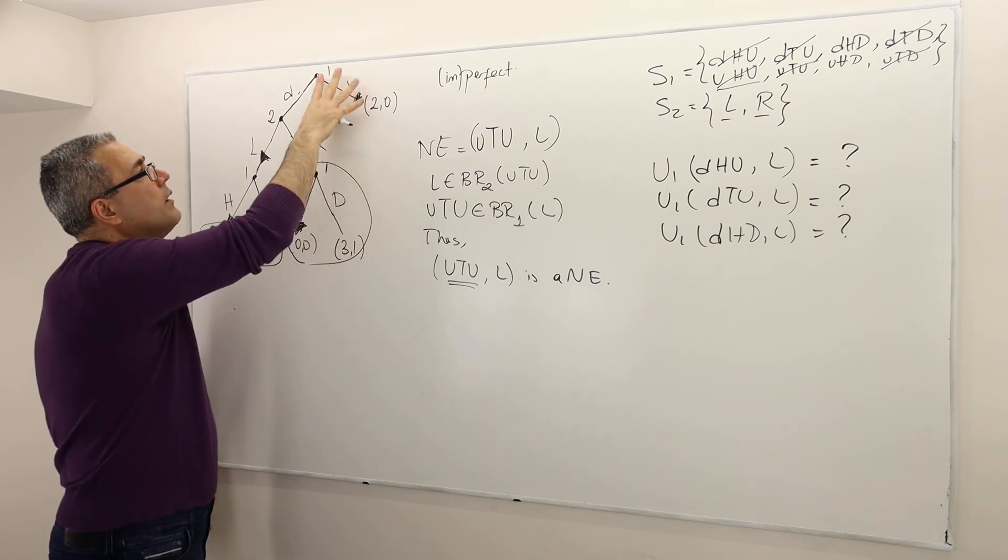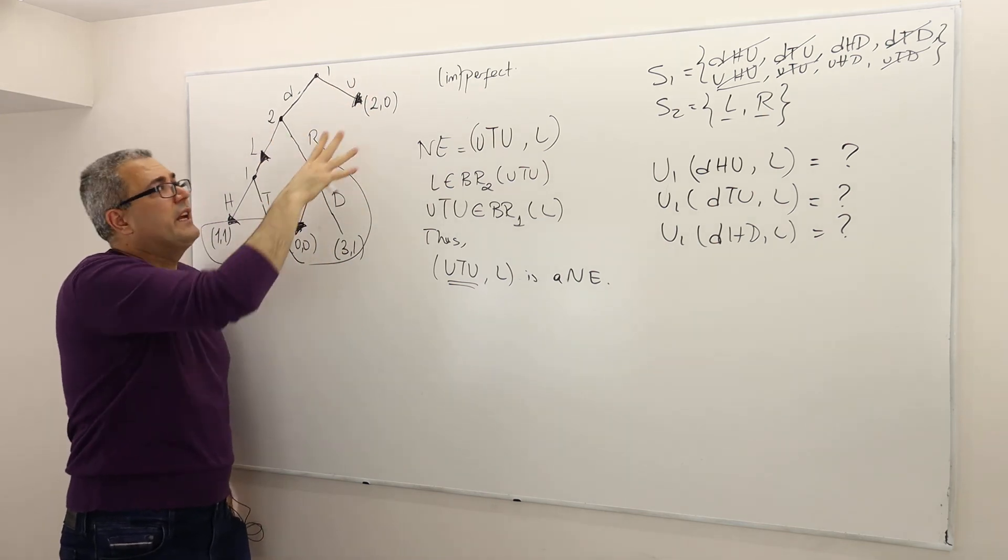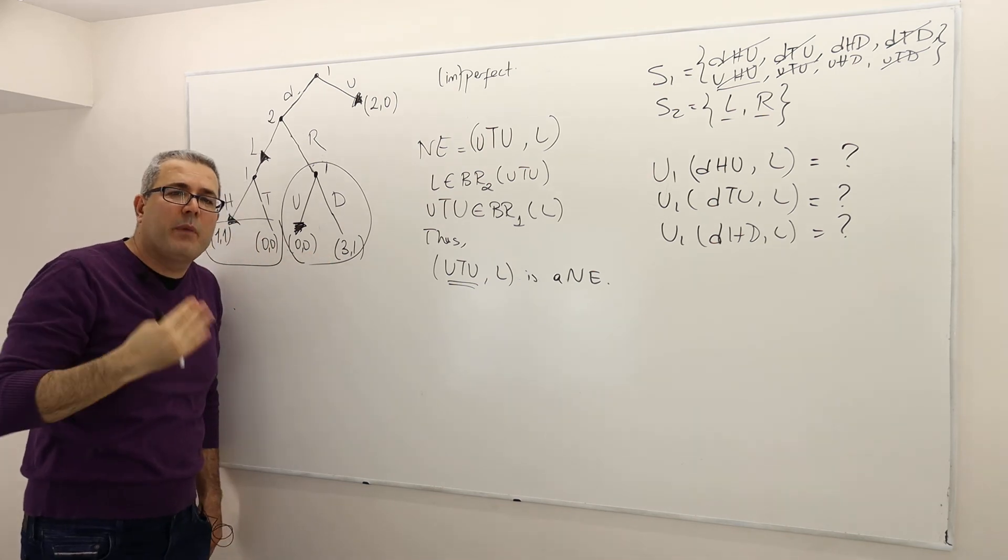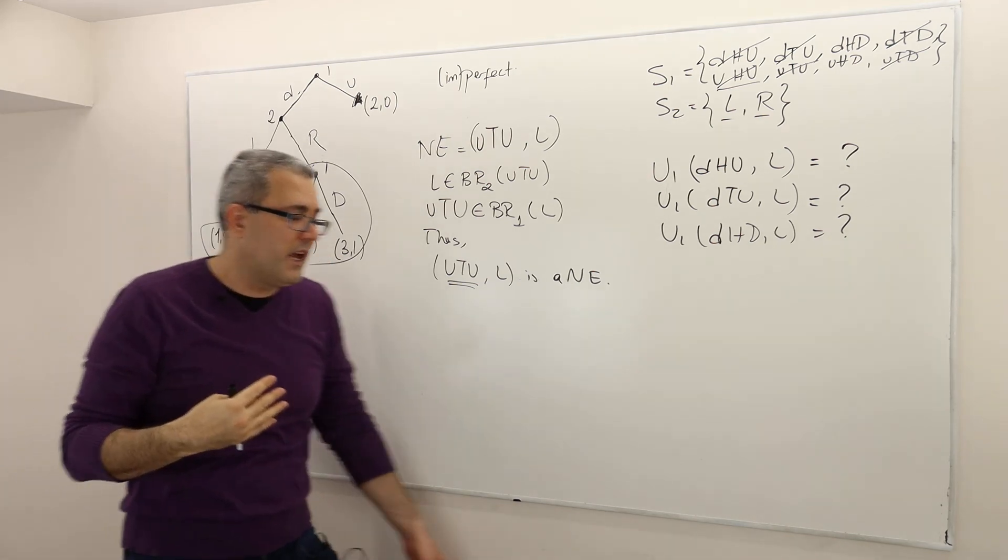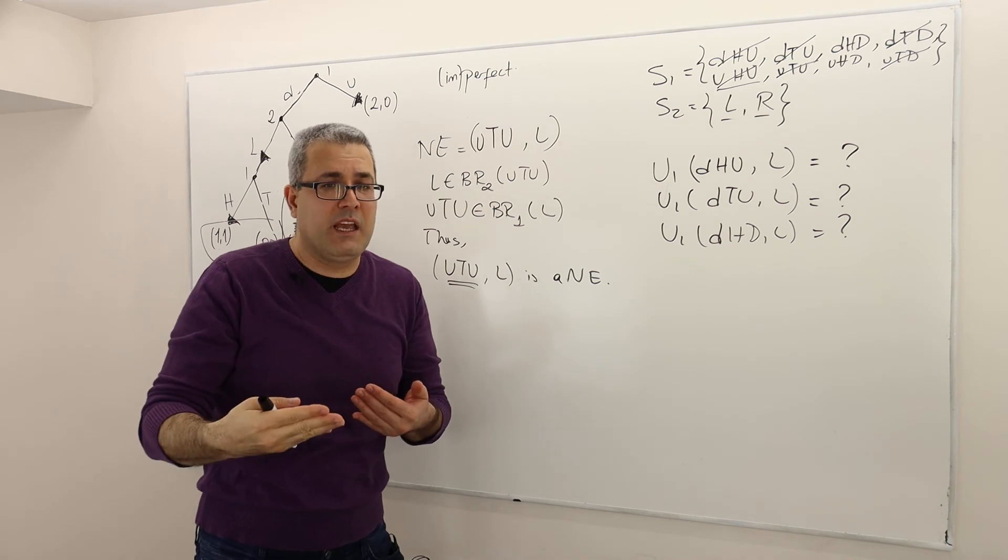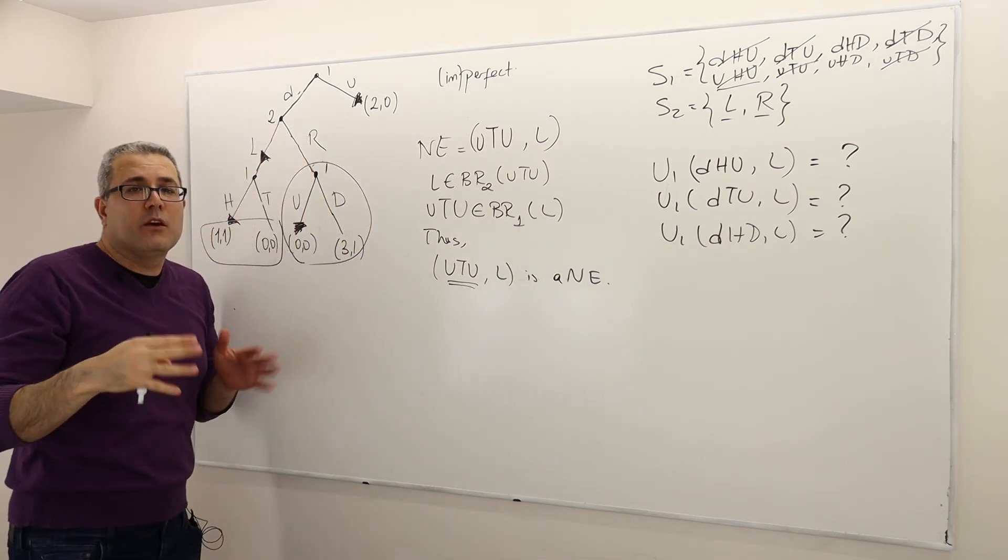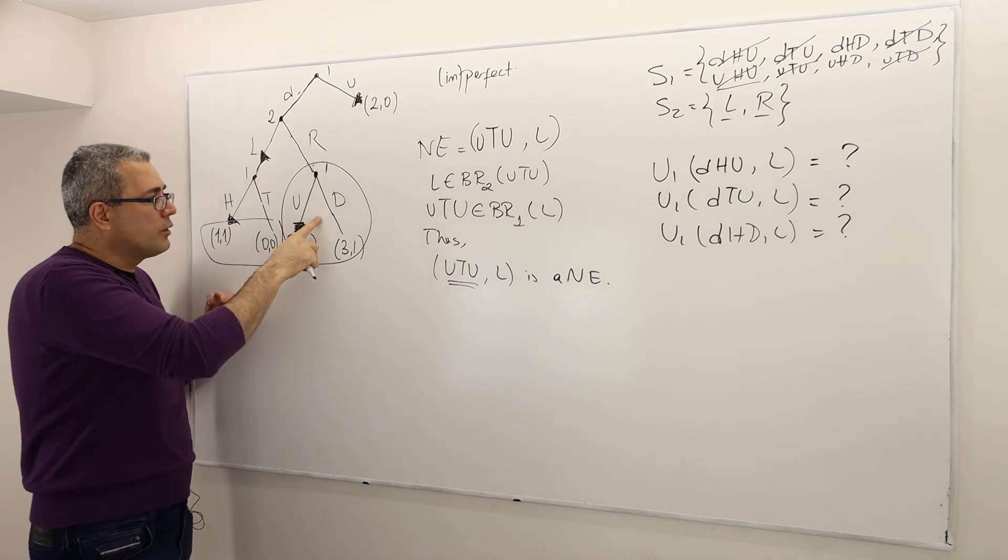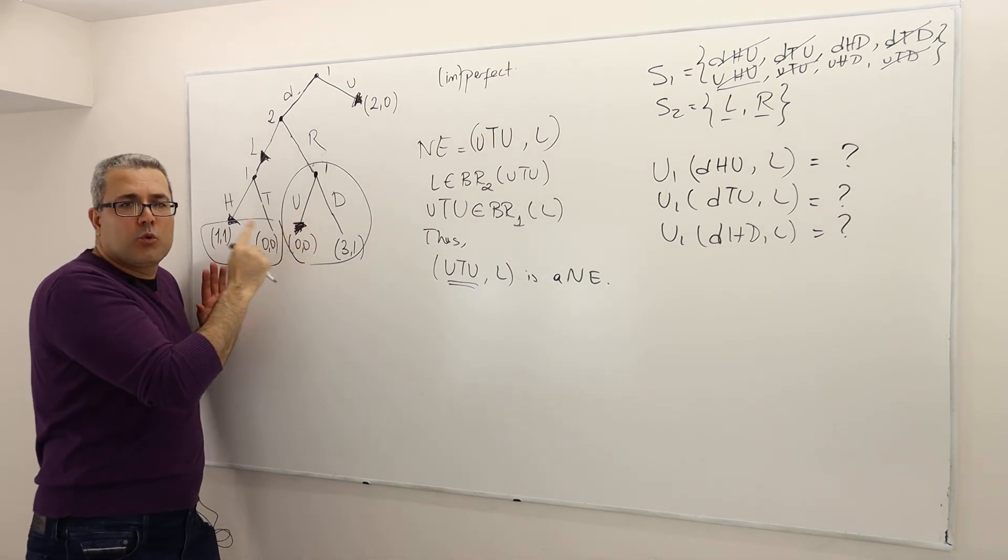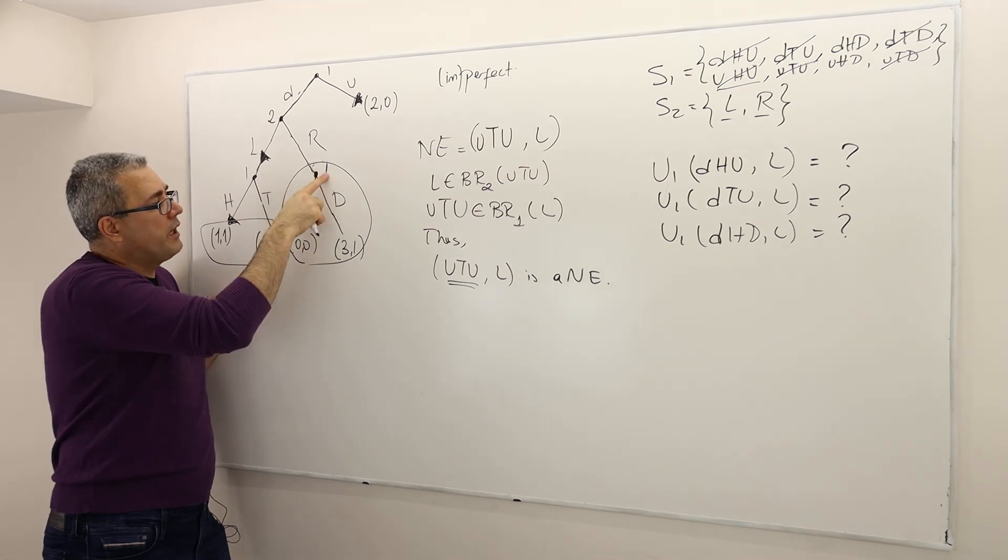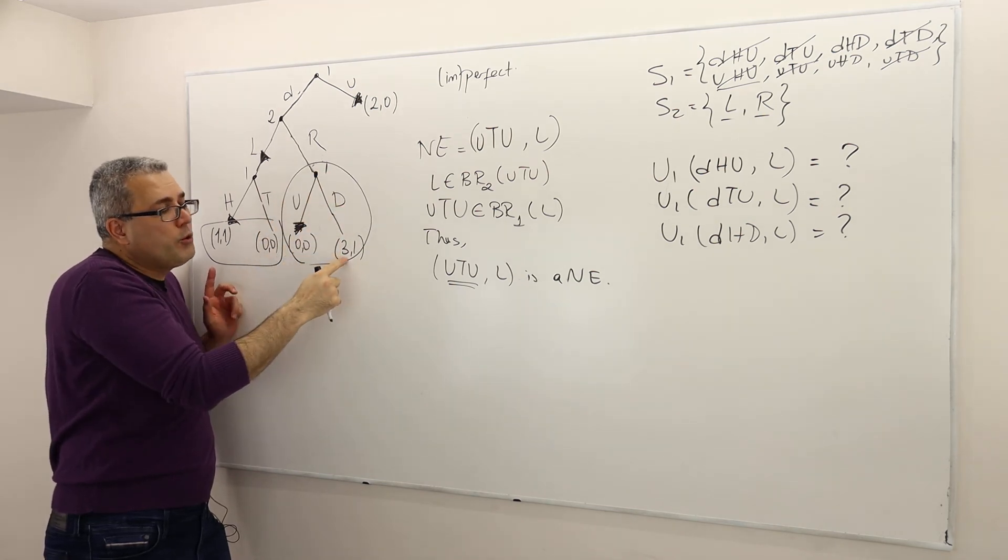But don't forget this idea of backward induction of subgame perfect Nash is that every subgame, even though it's not reached, should be played optimally wisely. So the question is, is U the optimal or wise strategy here? No, because U is going to bring player one zero payoff, but D would bring him three.